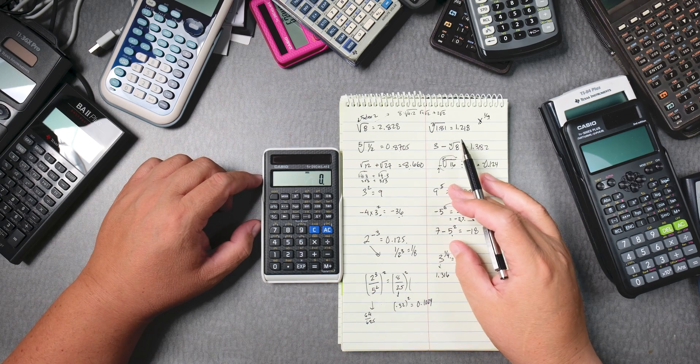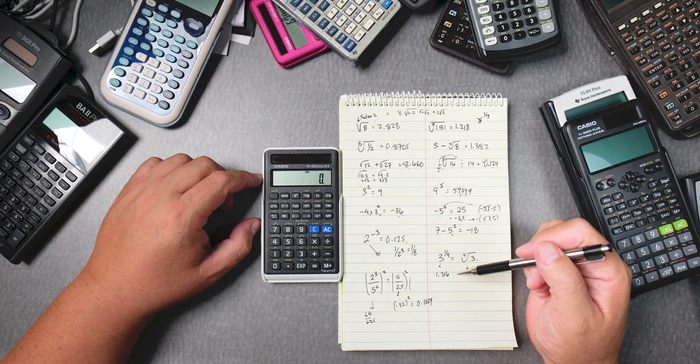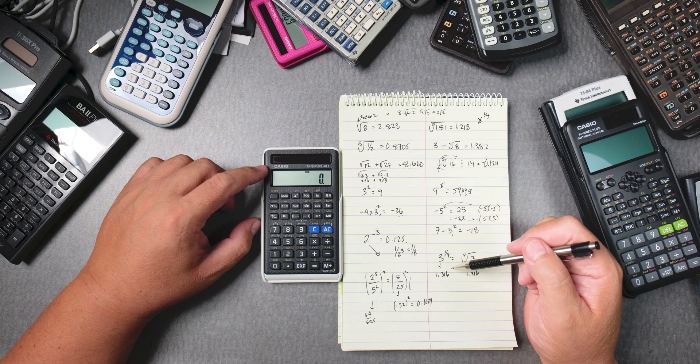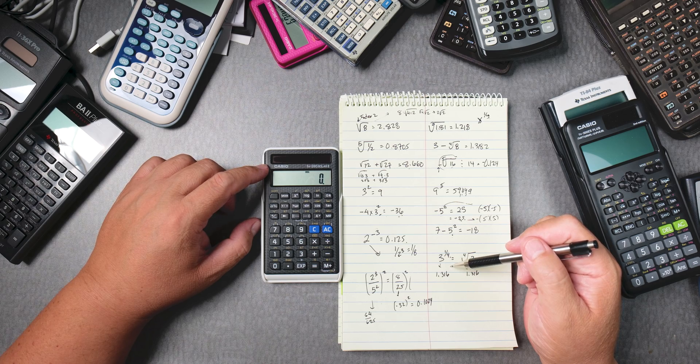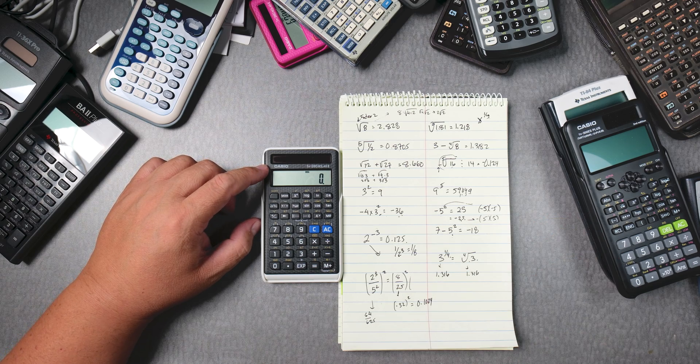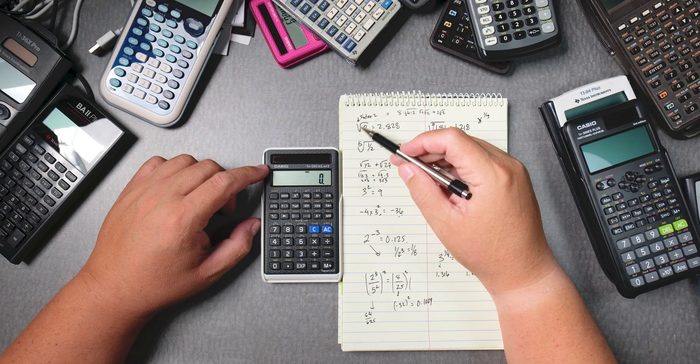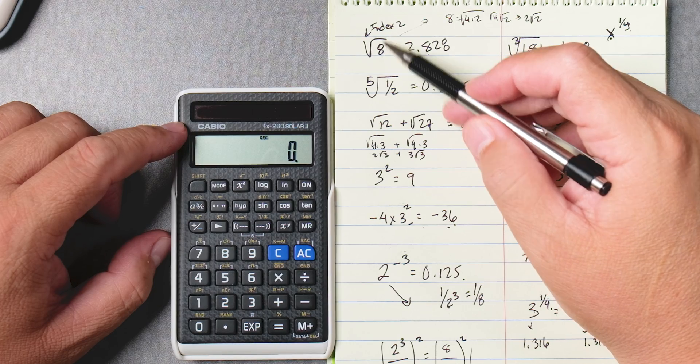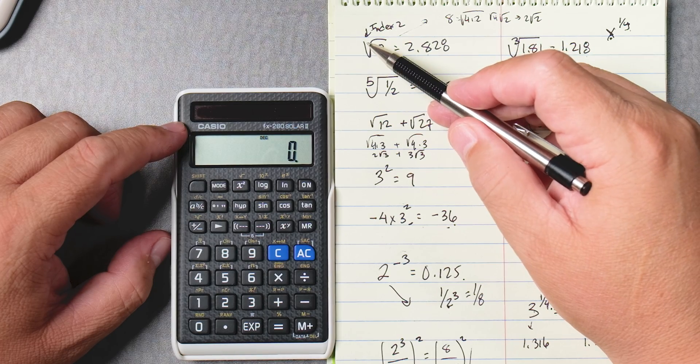In this video we're going to talk about roots and powers and using the Casio FX 260 solar 2. Okay, so let's say I want to take the square root of 8. The square root of 8 has an index of 2.